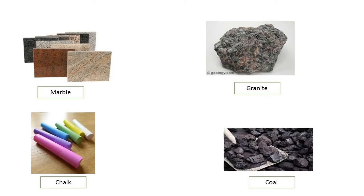بچو rocks جو solid ہوتے ہیں، یہ زمین کی surface پر پائے جاتے ہیں۔ اس کے علاوہ یہ underground بھی موجود ہوتے ہیں۔ کچھ rocks سخت ہوتے ہیں جیسے کہ granite وغیرہ، اور کچھ rocks soft ہوتے ہیں جیسے chalk، coal وغیرہ۔